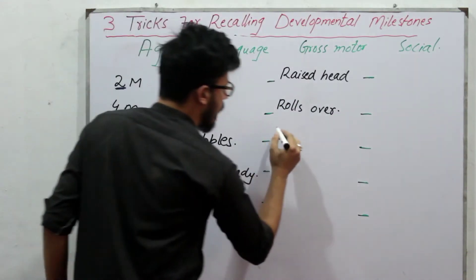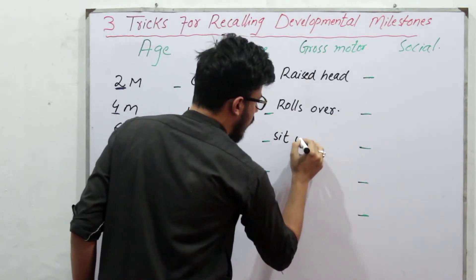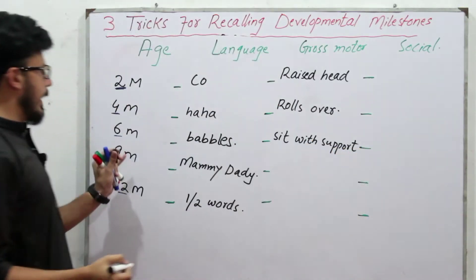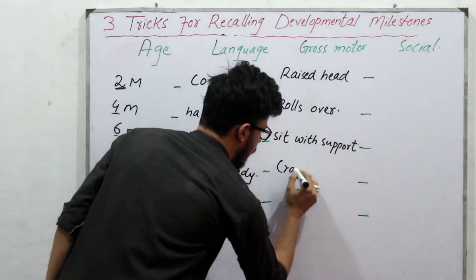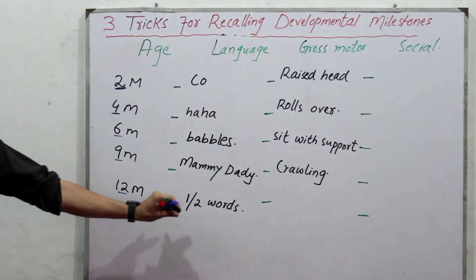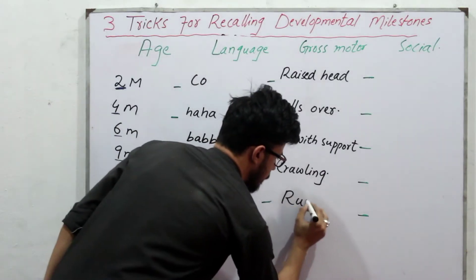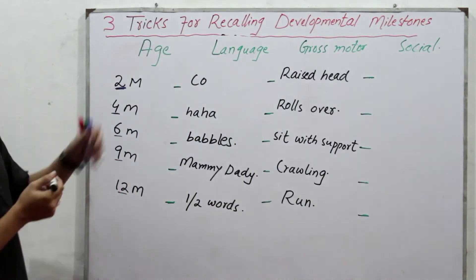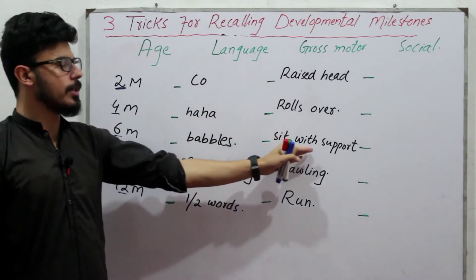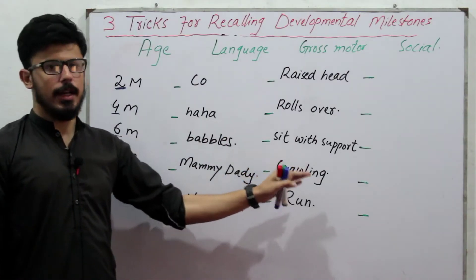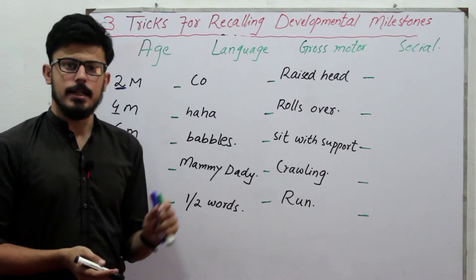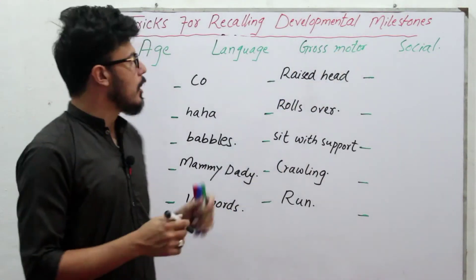A six-month-old baby can sit with support, a nine-month-old baby can crawl, and a twelve-month-old baby can walk. So: two months — raise head, four months — rolls over, six months — sit with support, nine months — crawling, twelve months — walking, if the child is normal.